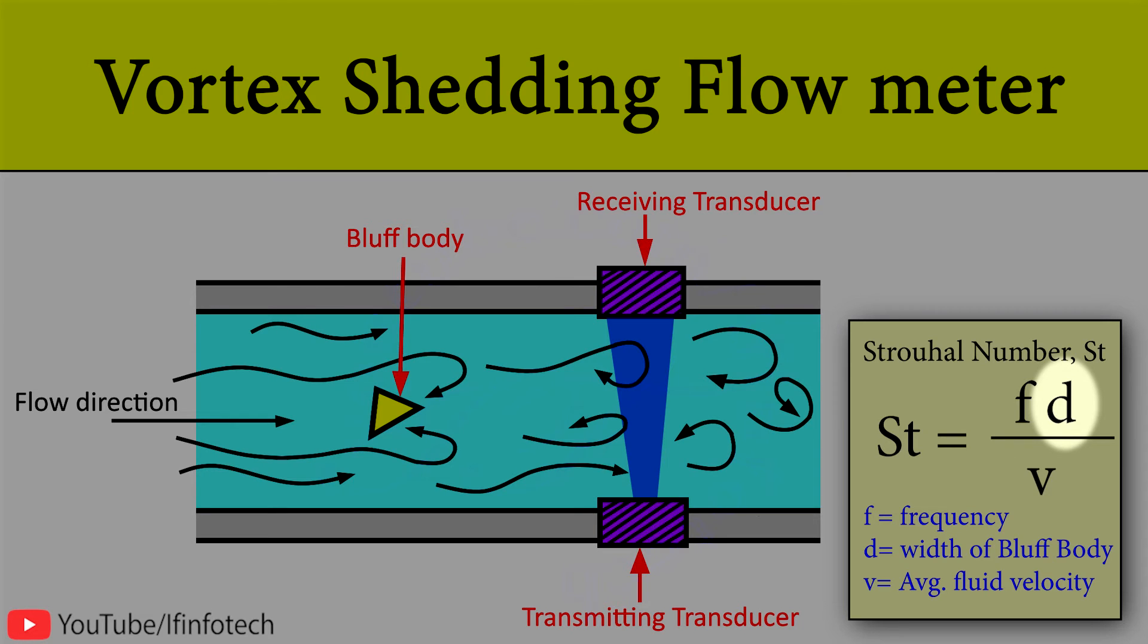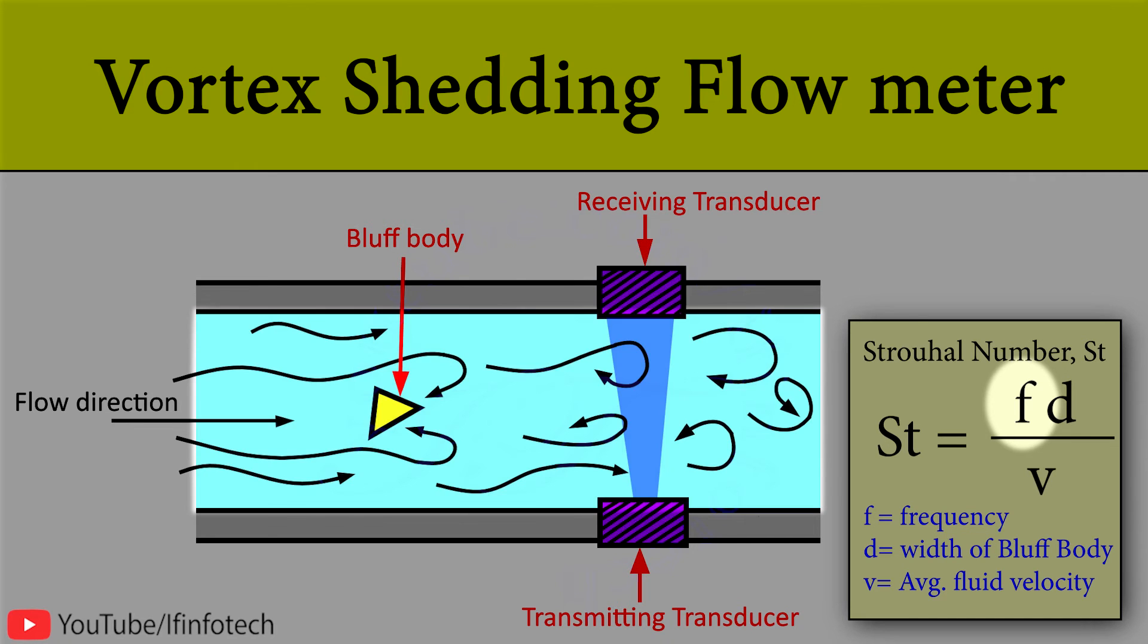The width of the bluff body is fixed, therefore it is constant. The frequency of vortex shedding is linearly proportional to the average flowing velocity over a wide range of Reynolds numbers.